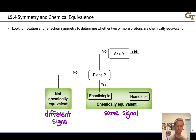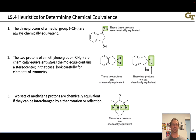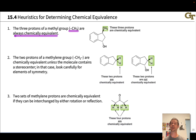This slide touches on useful heuristics for determining chemical equivalence. You can go down a rabbit hole with methyl groups because of the three C–H bonds and rotation, but the good news for proton NMR is that the three protons of a methyl group are always chemically equivalent to each other. Different methyl groups connected to different things will show up at different signals, but within a given methyl group those three hydrogens can be treated as chemically equivalent — all part of the same signal.